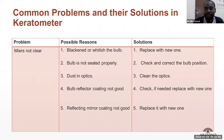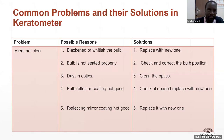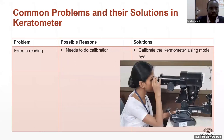If the machine is working but you can't get clear mires, possible reasons include a blackened bulb that can't produce a clear image — replace the bulb. The bulb may not be seated properly — check and reseat it. Dust on the optics — clean as described. If the reflecting mirror coating is degraded, replacement may be needed — this requires a biomedical engineer. For errors in readings, perform calibration as discussed.